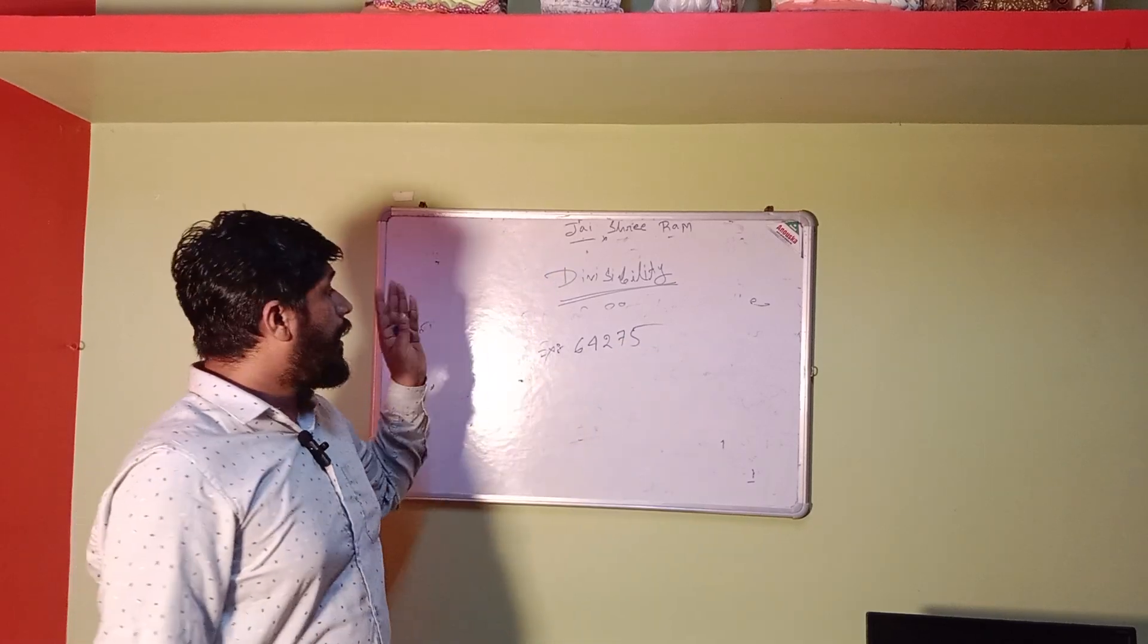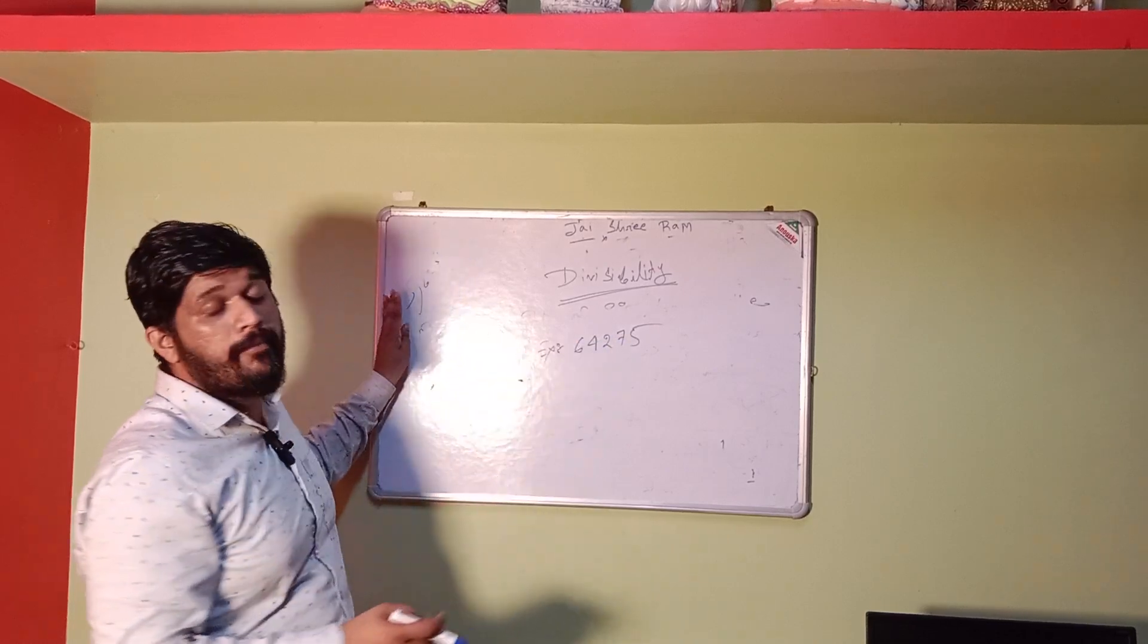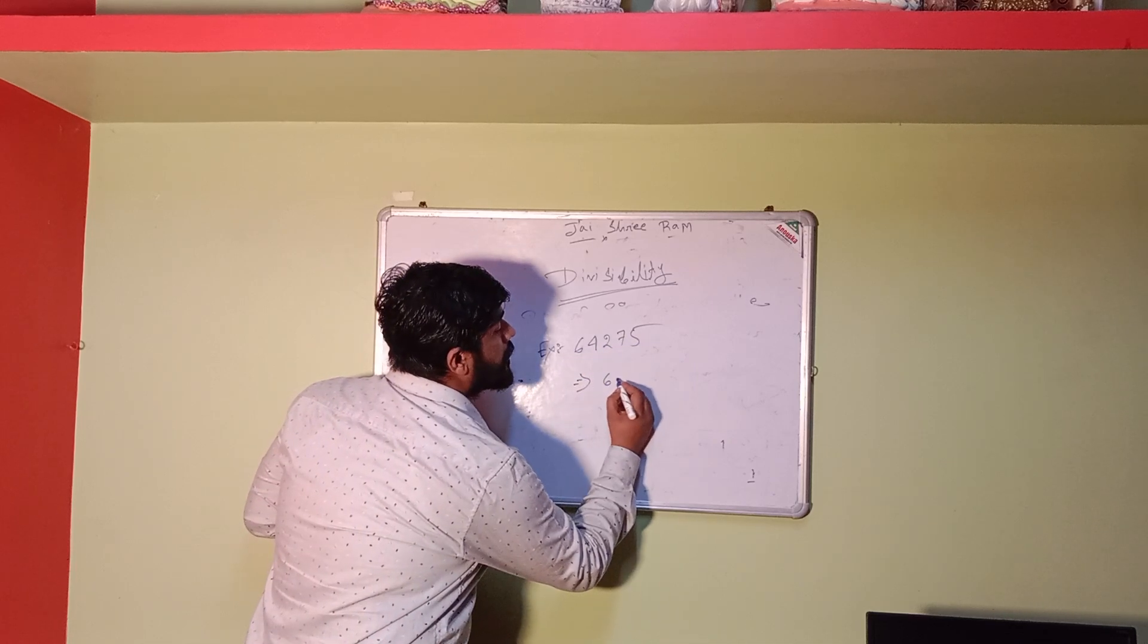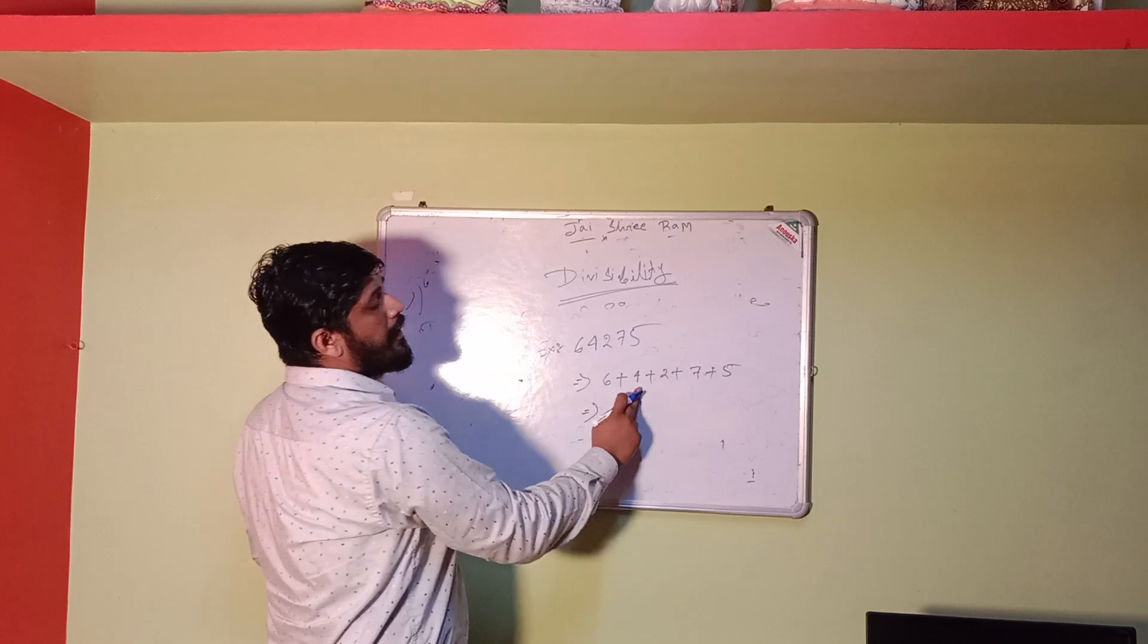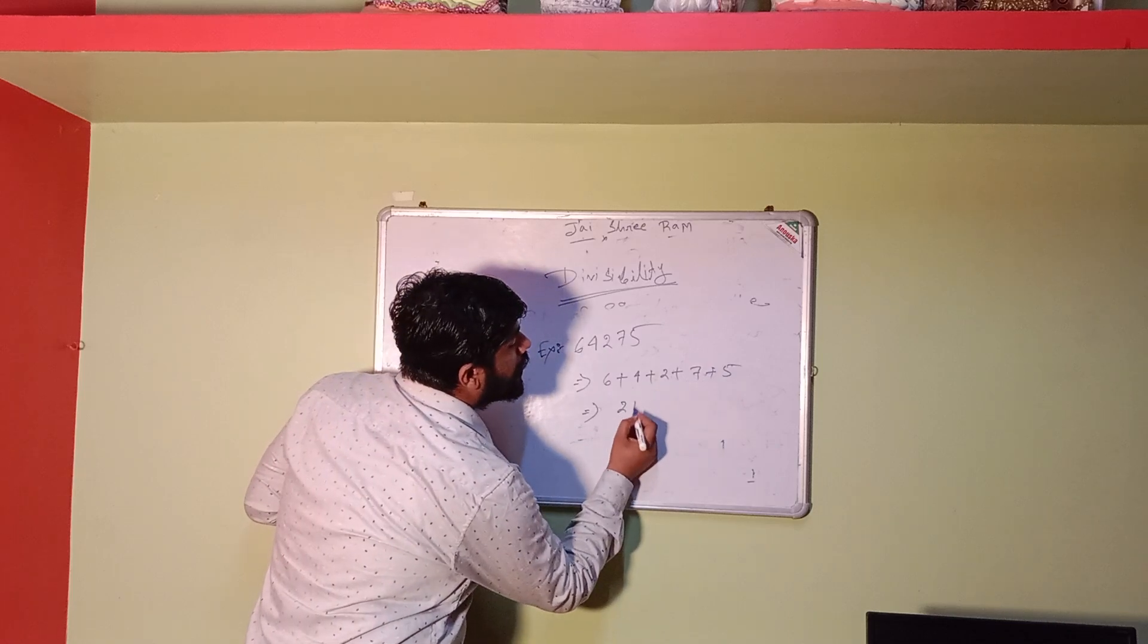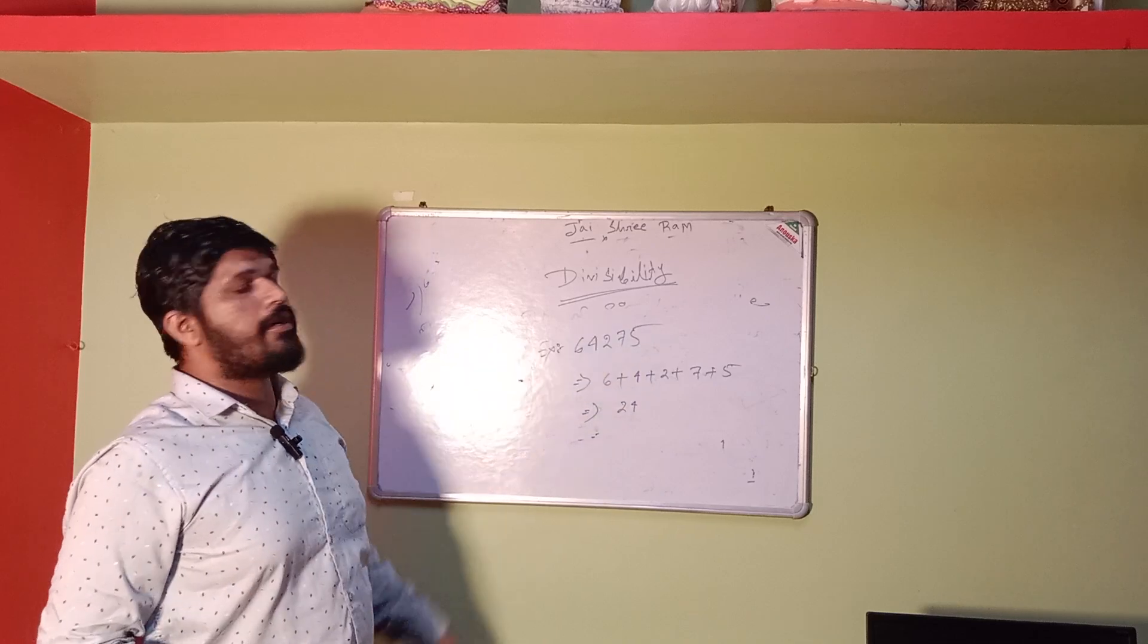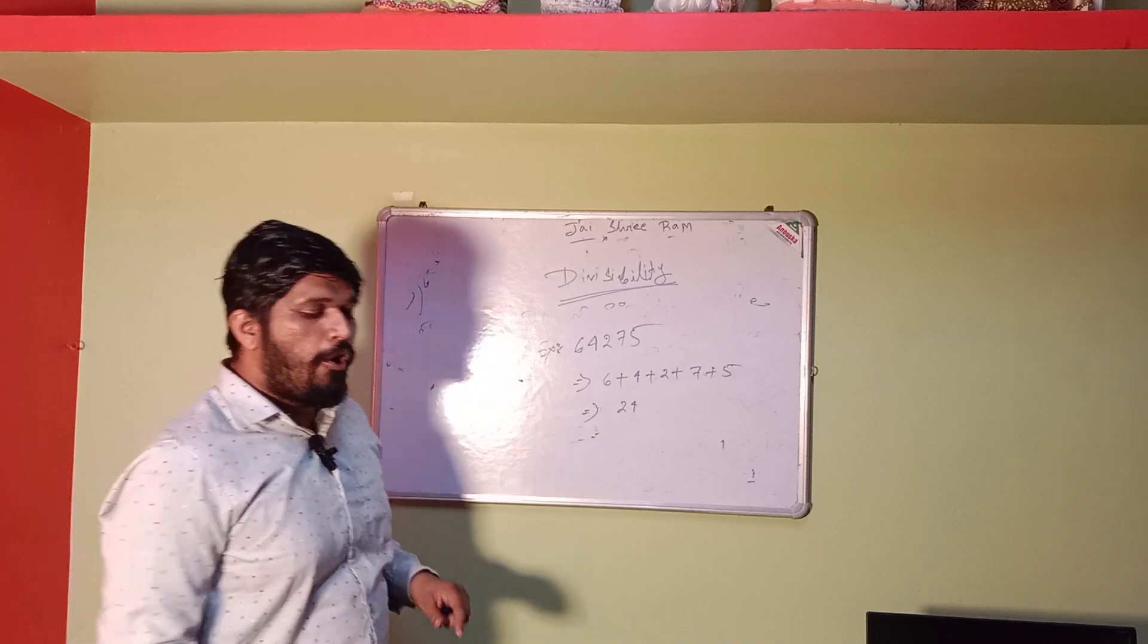Example: 64275. When we write down rules for large numbers, it's very time consuming. So we apply the process: sum of the digit of the number. 6 plus 4 plus 2 plus 7 plus 5. 6 plus 4 is 10, 12, 19, 24. After sum check if it's divisible by 3 or not. 3, 6, 9, 12, 15, 18, 21, 24. So 64275 can be divided by 3. Clear the concept of divisibility rules of 3.